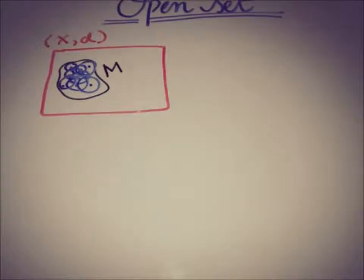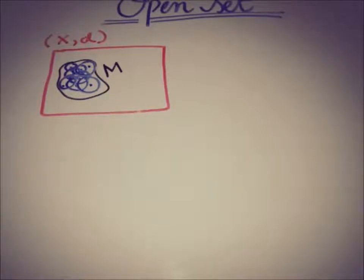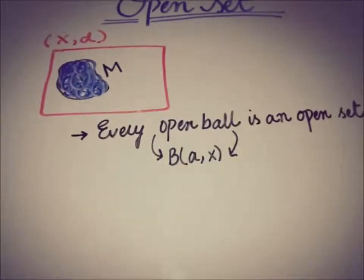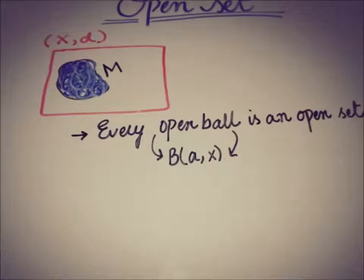Now moving toward the relation of open sets and open balls in a metric space: every open ball is an open set. This is the key relation between open balls and open sets in a metric space. We will now see the proof of this claim.